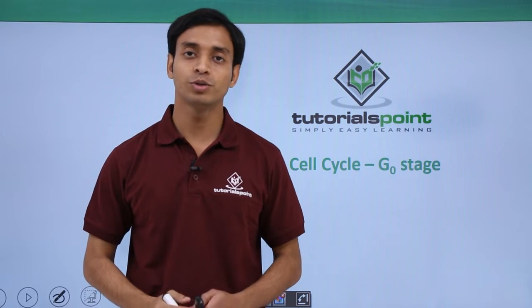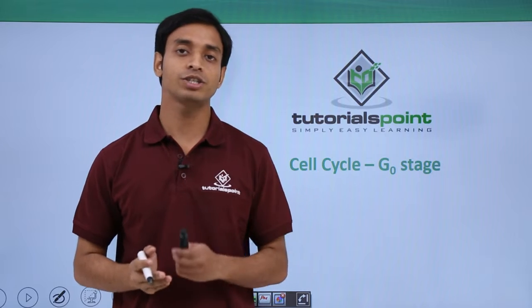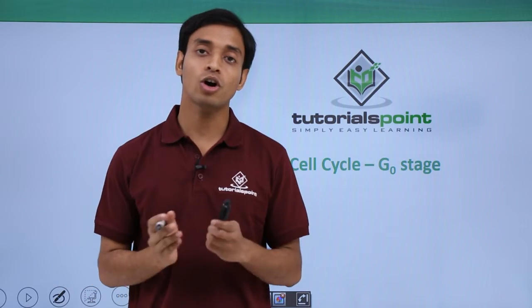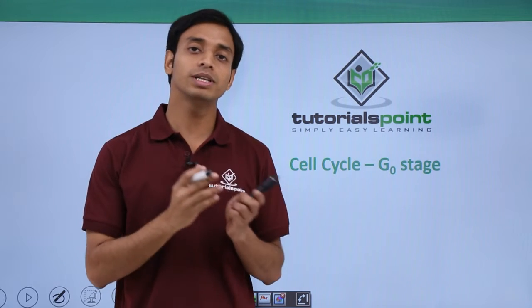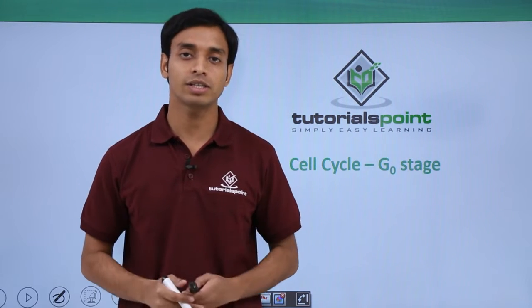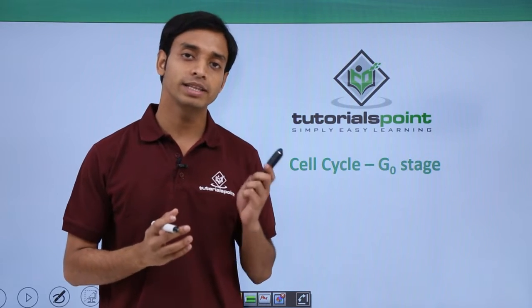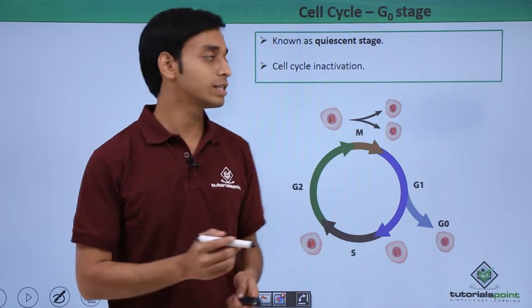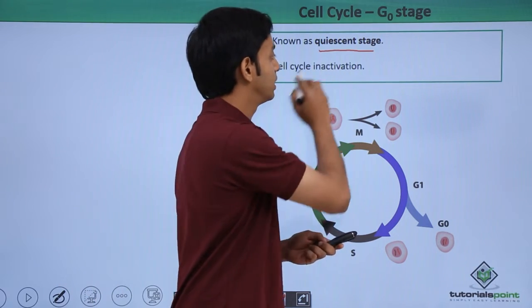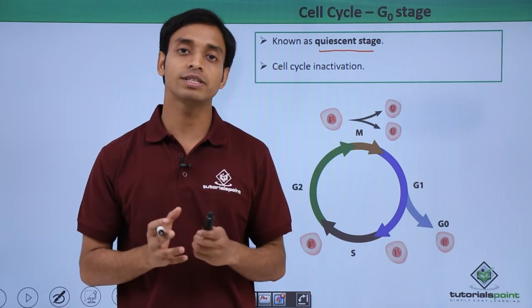Hello everyone, welcome to Tutorials Point. In this video, we are going to talk about a stage known as the G0 stage. This is slightly different from the normal cell cycle stages. The G0 phase is also known as the quiescent stage. This is the stage of cell cycle inactivation, meaning the cell is not going to perform the normal activity of cell cycle.